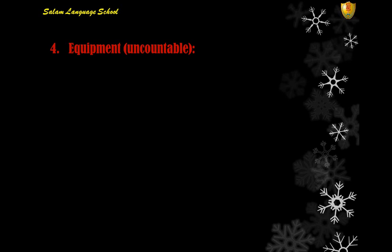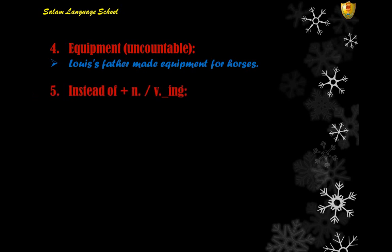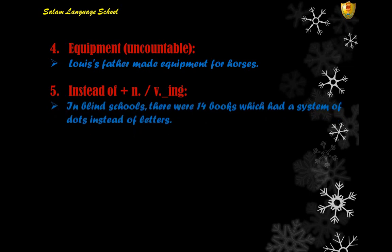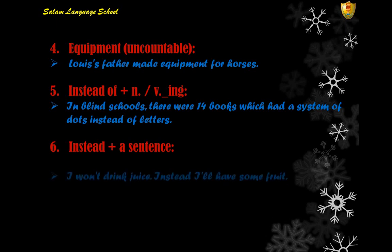Number four: 'equipment' is an uncountable noun. For example: 'Louis's father made equipment for horses.' Number five: 'instead of' can be followed by a noun or a gerund. For example: 'In blind schools there were books which had a system of dots instead of letters', or 'instead of using letters.' Number six: 'instead' without 'of' is followed by a full sentence. For example: 'I won't drink juice; instead, I'll have some fruit.'